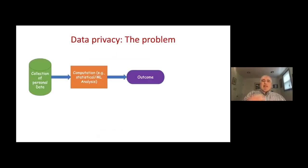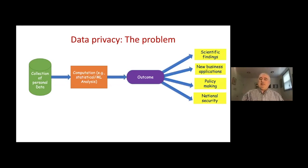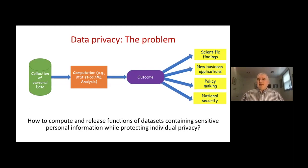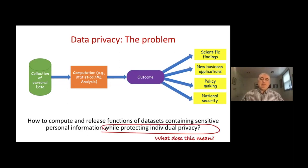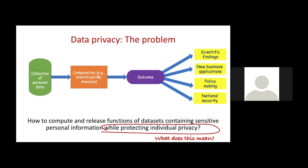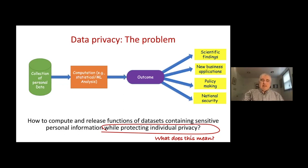I'll talk about privacy and the problem is as follows: we collect a lot of personal data — this is now an everyday thing. We use it in computations like statistical analysis or machine learning to produce useful outcomes. The problem is how to compute and release useful functions of the data set while protecting individual privacy, since the data set contains sensitive personal information. To answer this, we need to also ask: what do we mean by protecting individual privacy? Privacy is a concept discussed in many literatures, including computer science and legal writing.